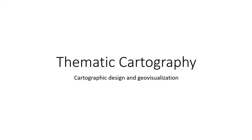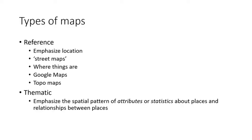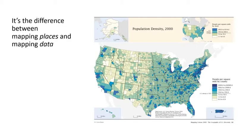We've got a lot to cover this week. We're talking about cartography and in particular thematic cartography. Reference maps show us where things are, while thematic maps emphasize spatial patterns that come from the data being represented. It's the difference between mapping places and mapping data.